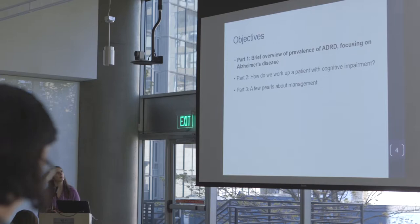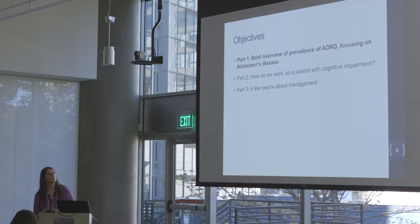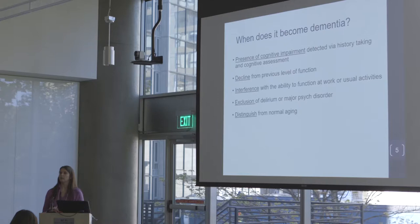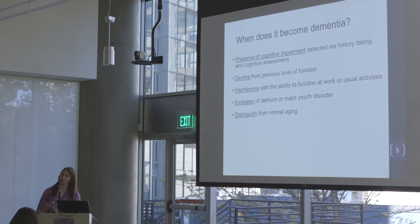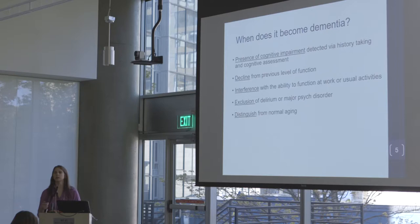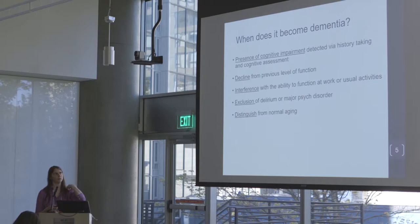When we talk about dementia, I get this question in clinic probably once a week: what is dementia and how is it different from Alzheimer's? Dementia is a decline in previous level of function — you had certain cognitive abilities and now they've decreased. It's interfering with your ability to do work or usual activities, you've excluded other things, and this is different from normal aging. But in practice this can get messy.